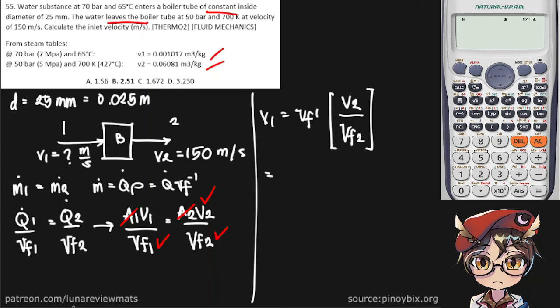And we can simply put that in our calculator. V sub 1 is 0.001017 times the exit velocity of 150 meters per second and an exit specific volume of 0.06081. And we do get a value of 2.51 meters per second.